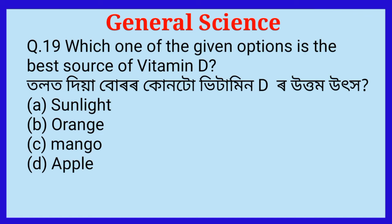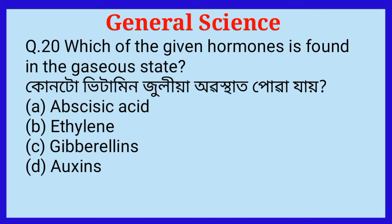Question number nineteen: Which one of the given options is the best source of vitamin D? Question number twenty: Which one of the given hormones is found in the gaseous state? The answer is option B, ethylene.